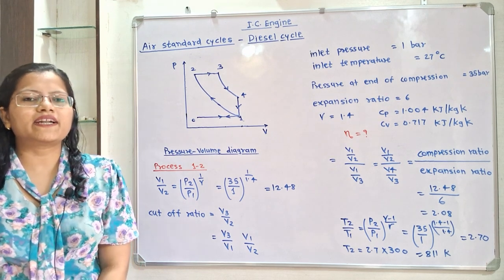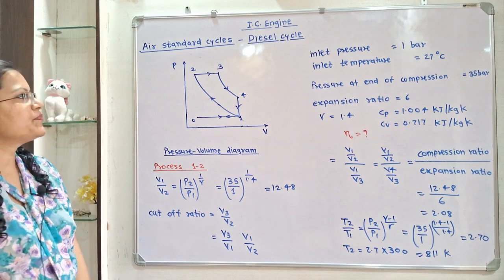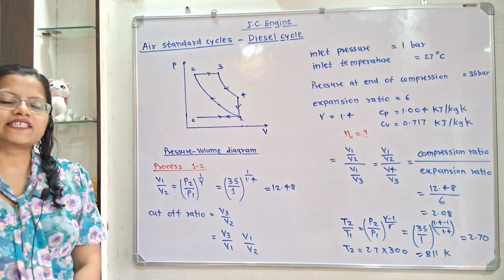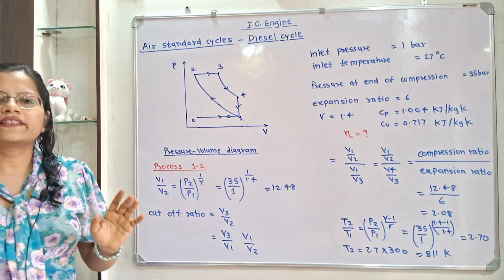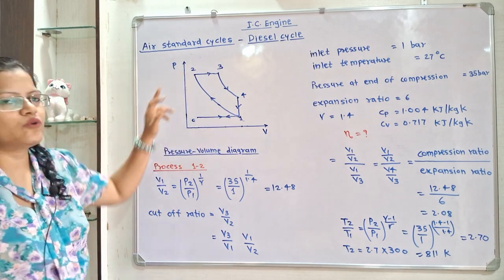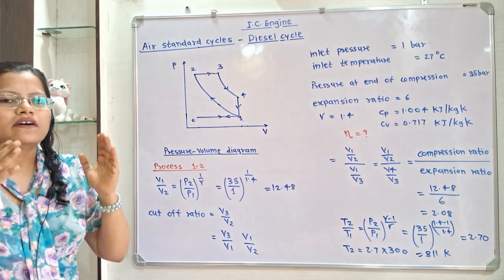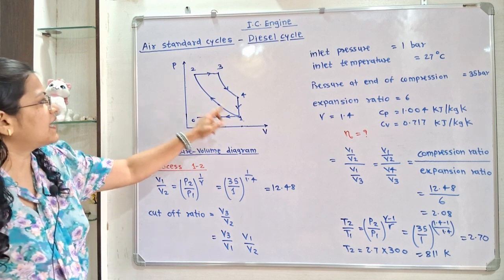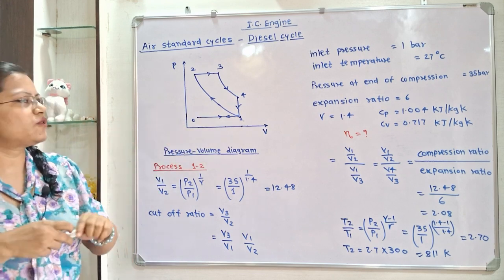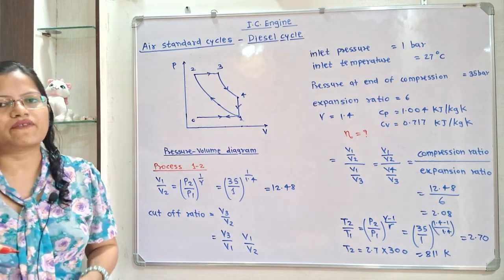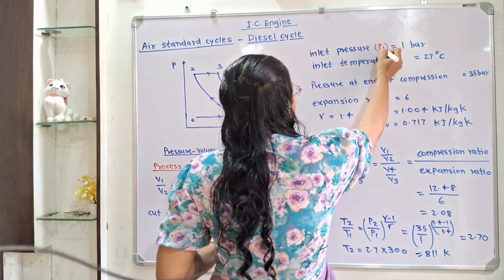Let us understand the given data with the help of a pressure-volume diagram of the diesel cycle. Inlet pressure is given as 1 bar. If we observe process 1 to 2, 3, 4, then process 1 to 2 is the isentropic compression process where air is getting compressed inside the piston-cylinder arrangement. Point 1 is the inlet point, so inlet pressure is P1, which is equal to 1 bar.